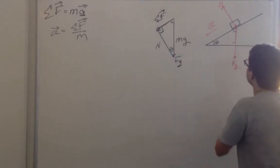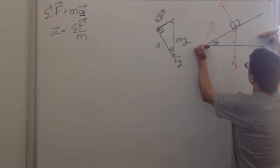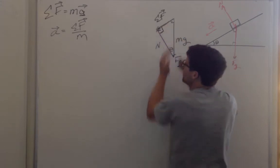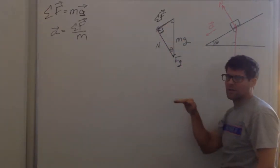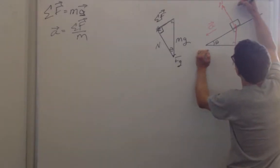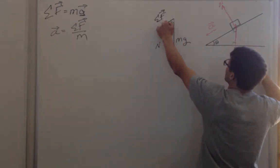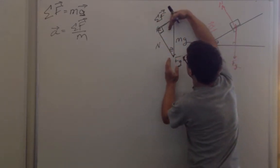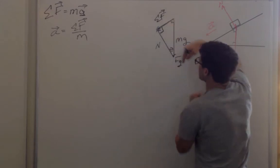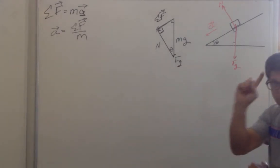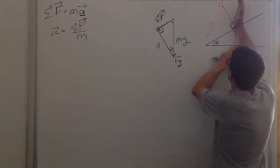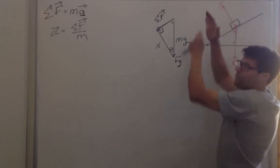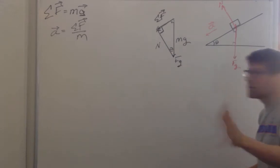How about the normal force? As theta goes to zero, we're at equilibrium in the perpendicular direction, and the normal force and the force of gravity would be equal and opposite. As theta gets bigger and bigger, the force of gravity becomes more and more parallel to the slope, and the normal force gets less and less. If you're on a slope that goes to vertical, you'll accelerate close to g and feel very little force pushing on you from that wall.